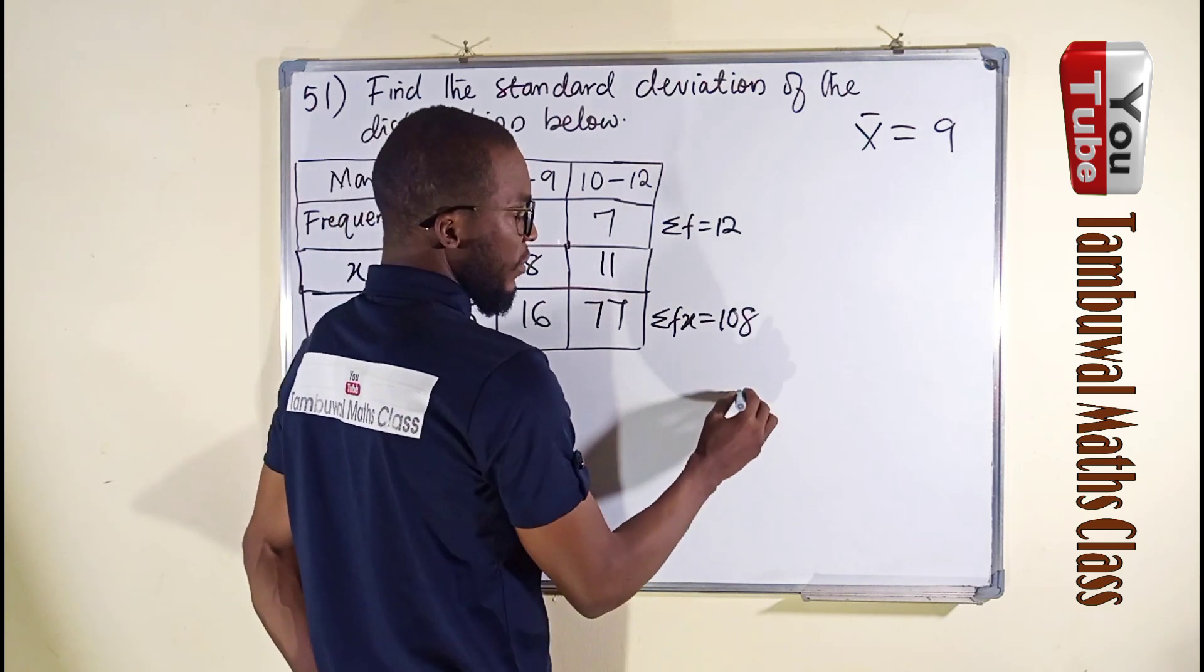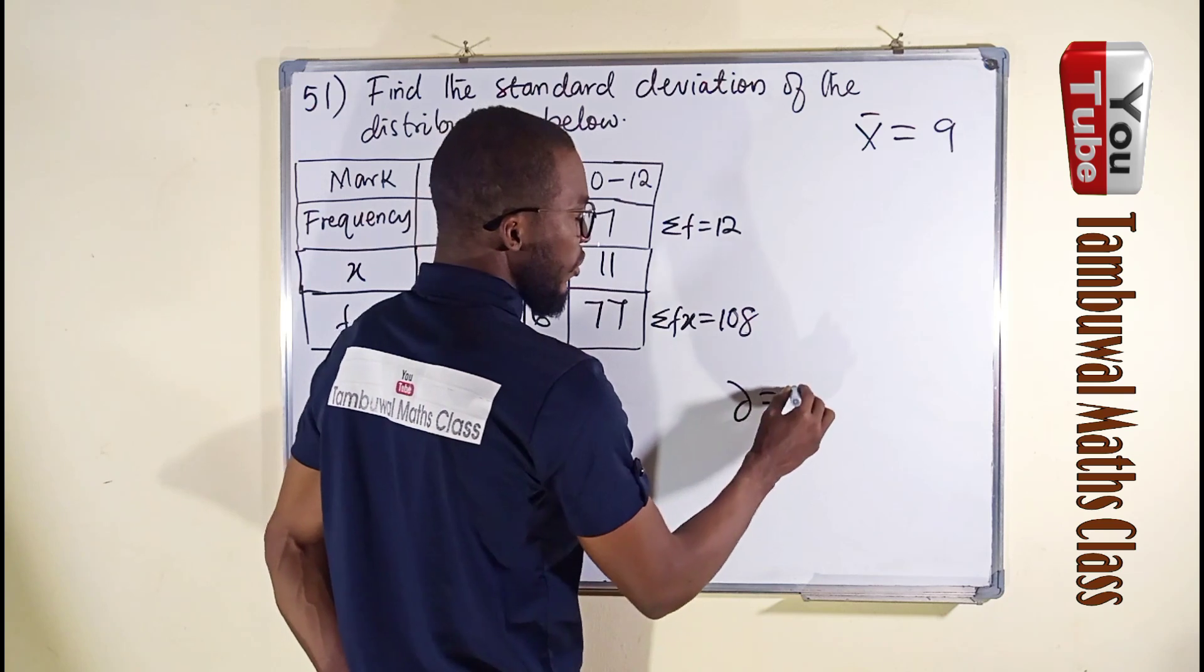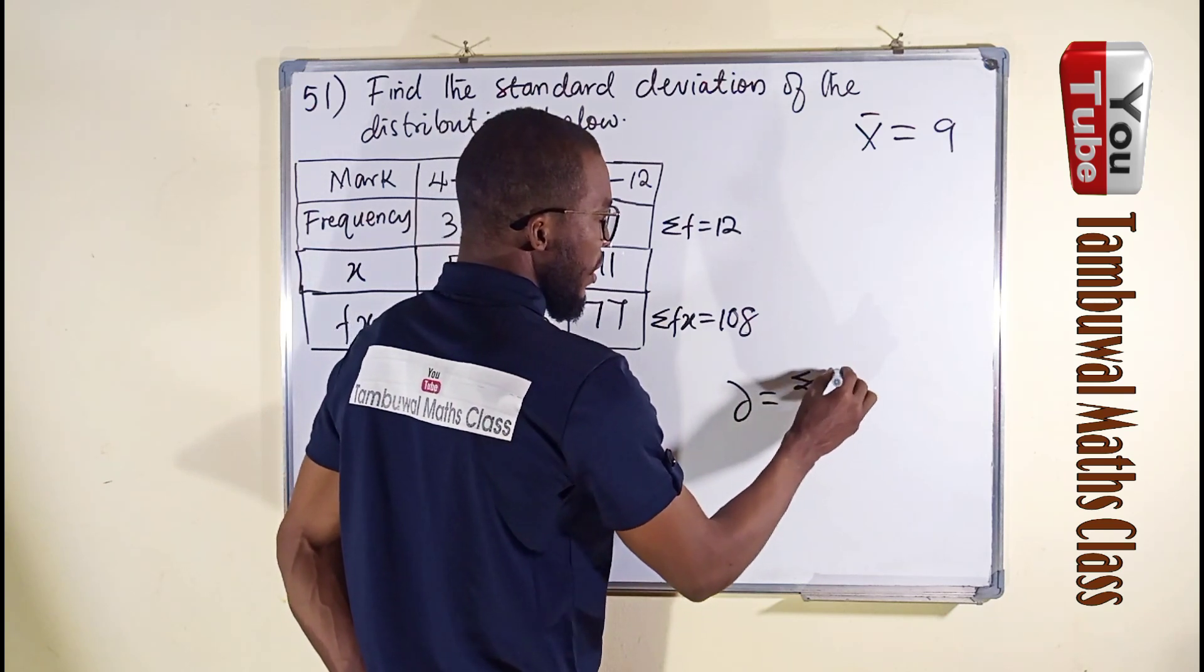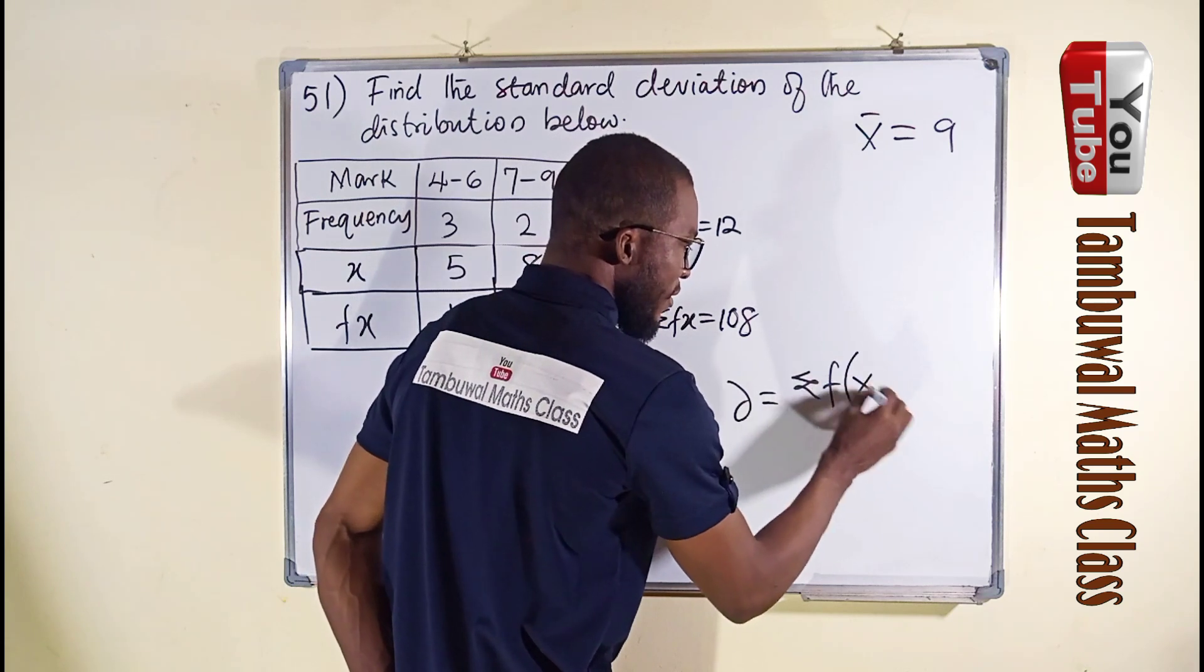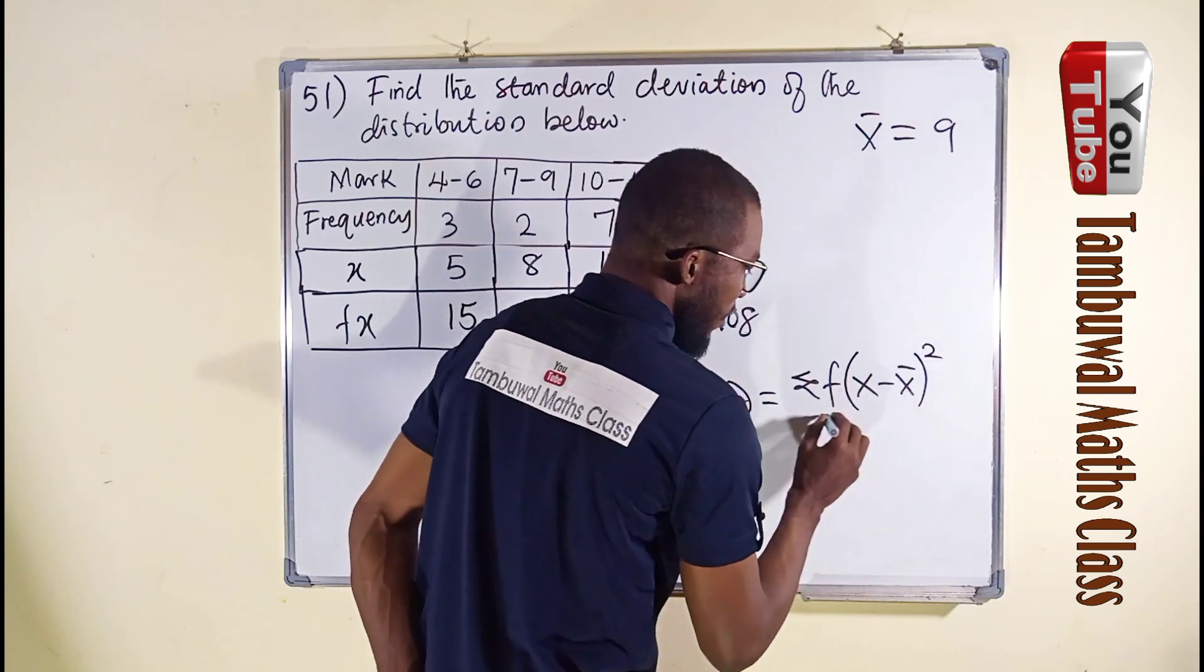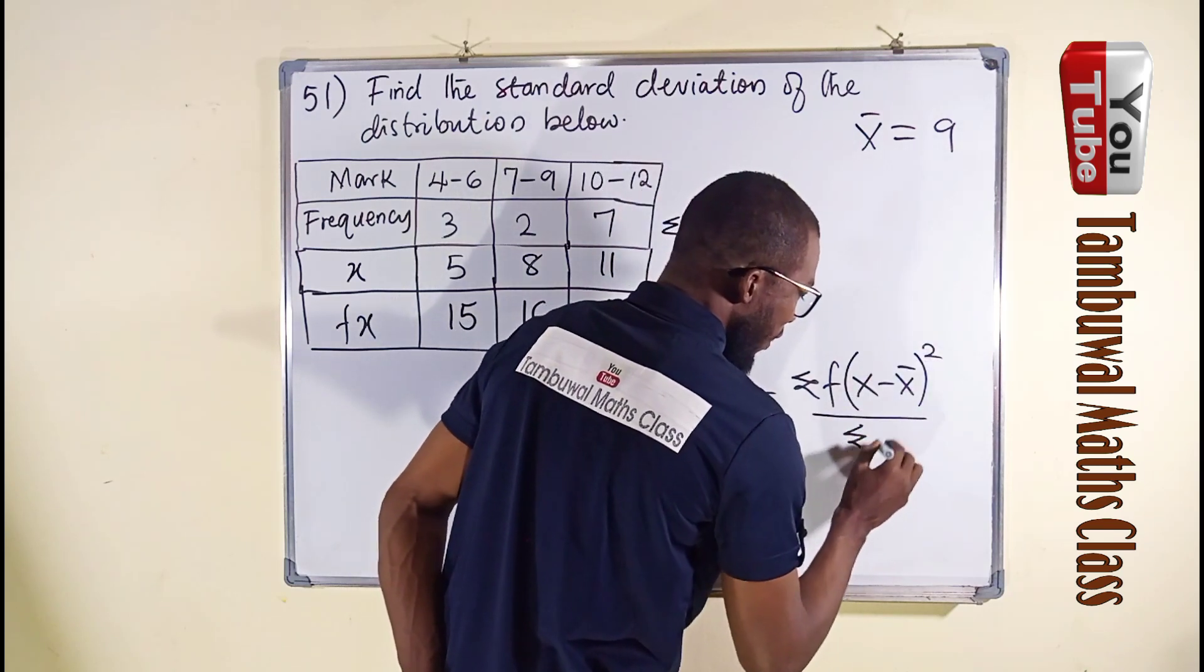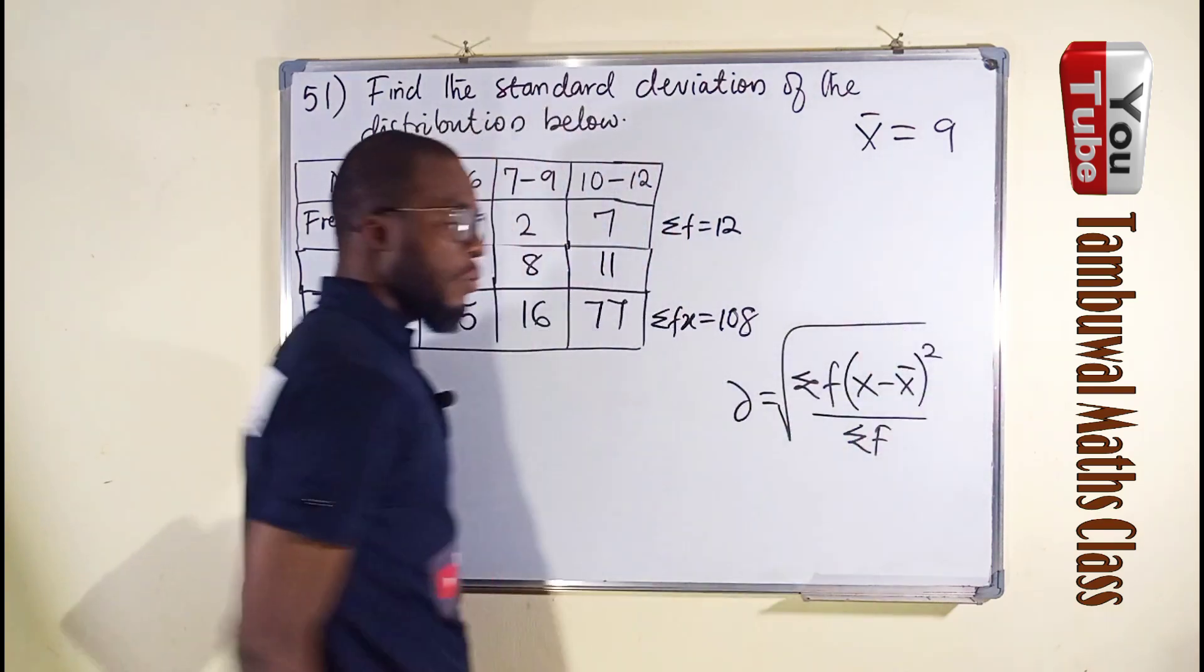Standard deviation, which is denoted by sigma, is equal to the summation of f frequency times x minus x bar, all squared, divided by summation of f, all under the square root.